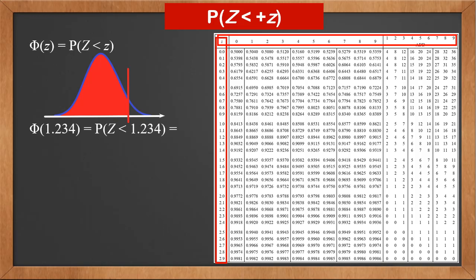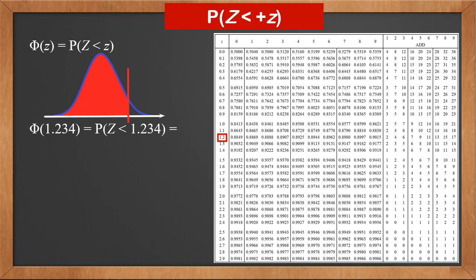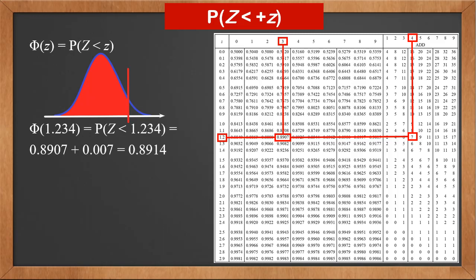Now let's find phi(1.234). Look down the first column to 1.2, then look across the first row to 3, and find the intersection. The number 0.8907 is the probability value phi(1.23). For the last digit 4, look further to the right on the first row. We can see there's a smaller box with numbers 1 to 9 and the word 'add'. We find 4 there, and look down to find the intersection with 1.2 — there's the number 7. We need to add 7 to the end of the probability, so phi(1.234) is 0.8907 + 0.0007 = 0.8914.